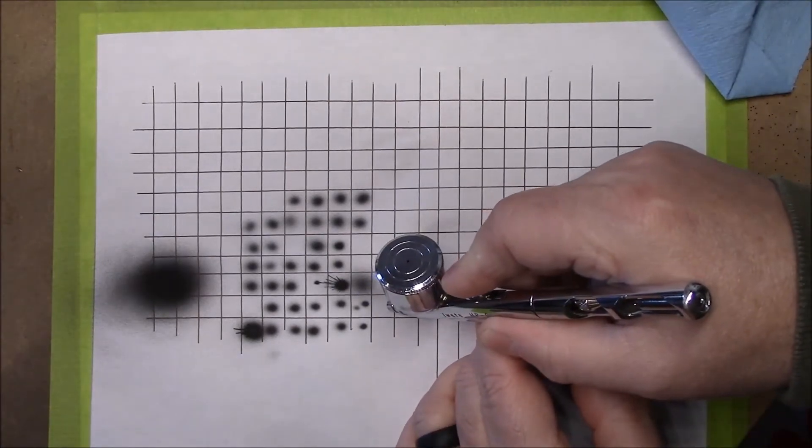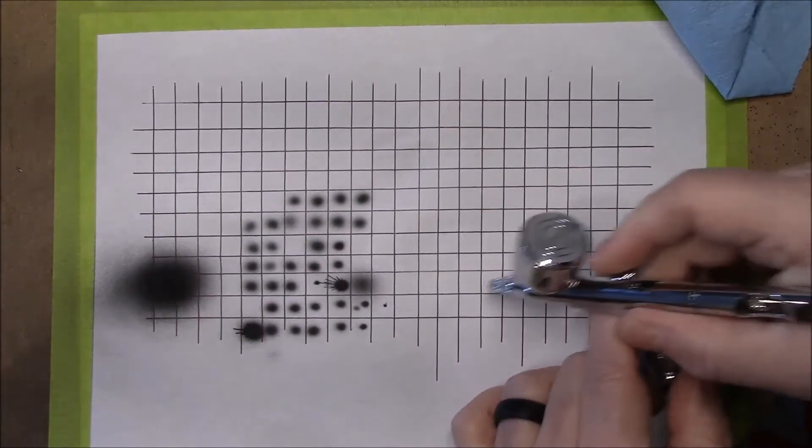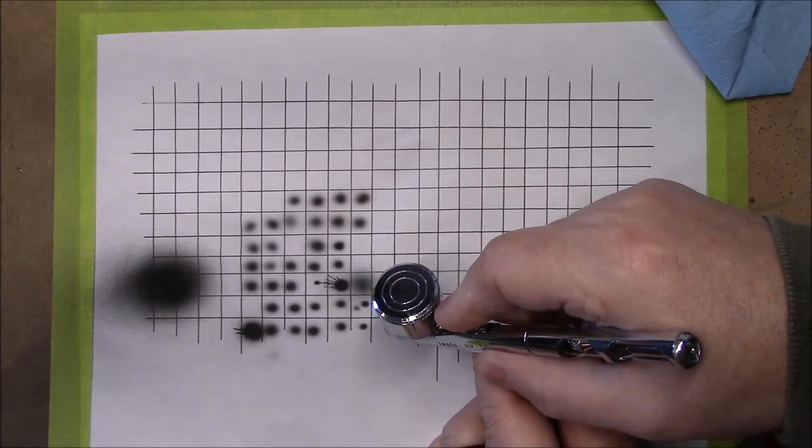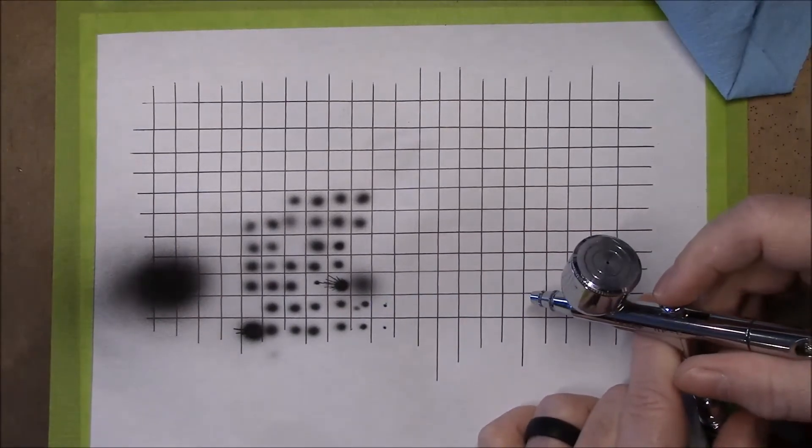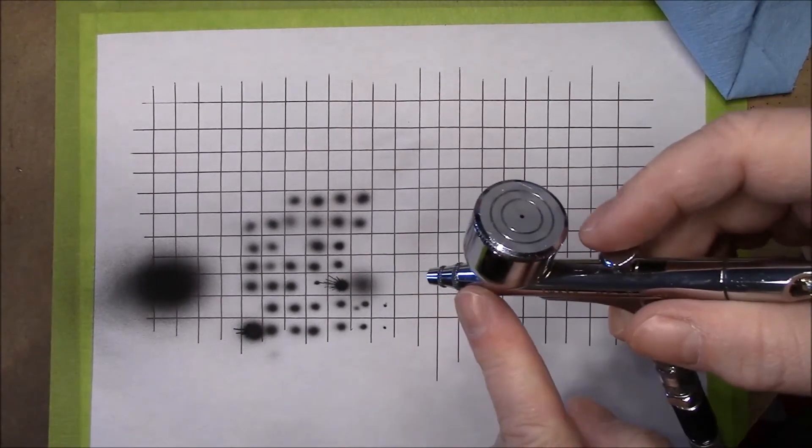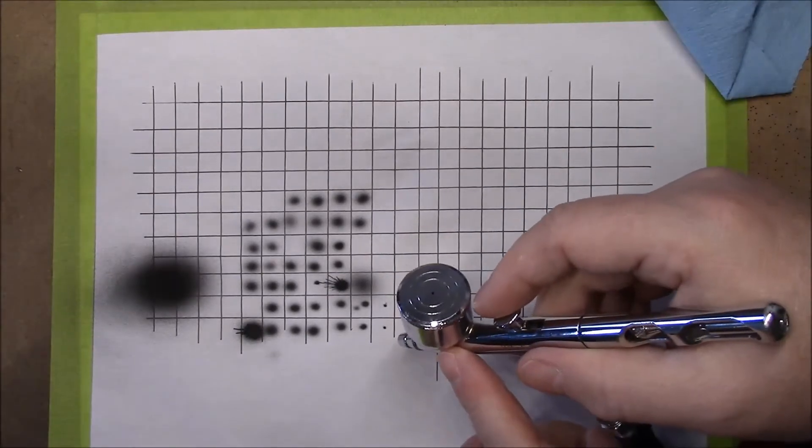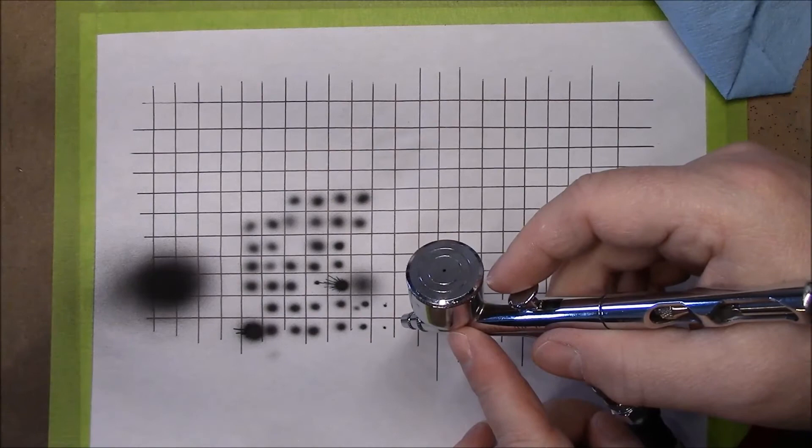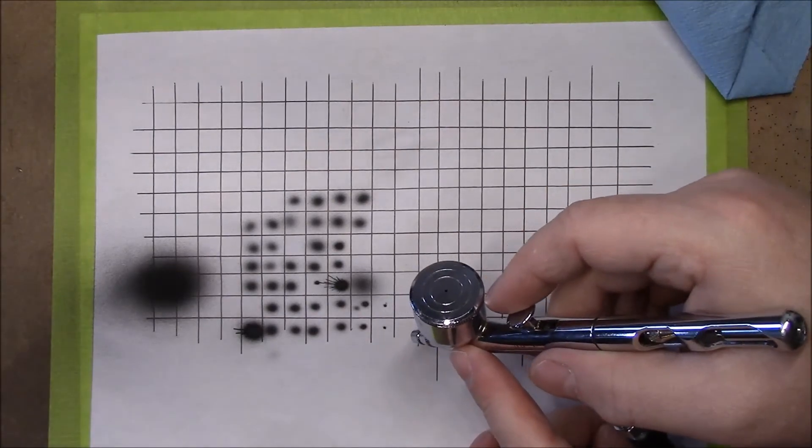And I can make this dot like tiny, like teeny, teeny, tiny. I can make an itty-bitty little dot with this. And that's not because of the size of my needle. It's not. It's because I'm controlling the distance and the pressure and the amount of paint that I'm putting to this paper. That's it.